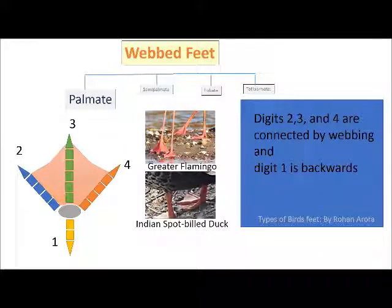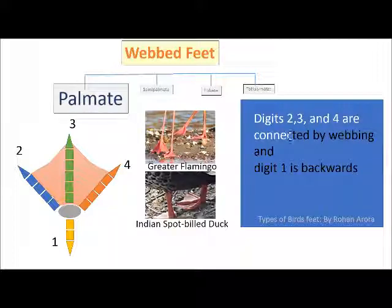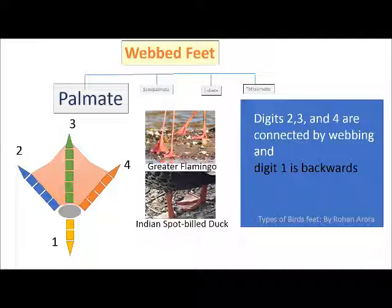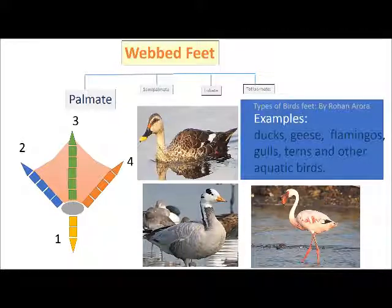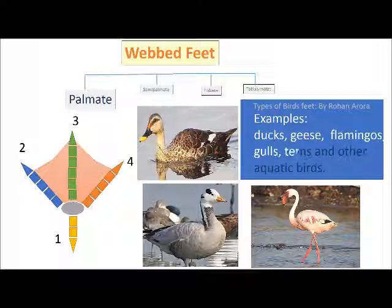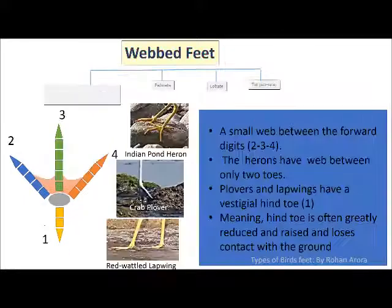Palmate is a type of webbed feet. In this arrangement, digits 2, 3 and 4 are connected by webbings and digit 1 is backwards. This type of arrangement is found in ducks, geese, flamingos, gulls, terns and other aquatic birds.